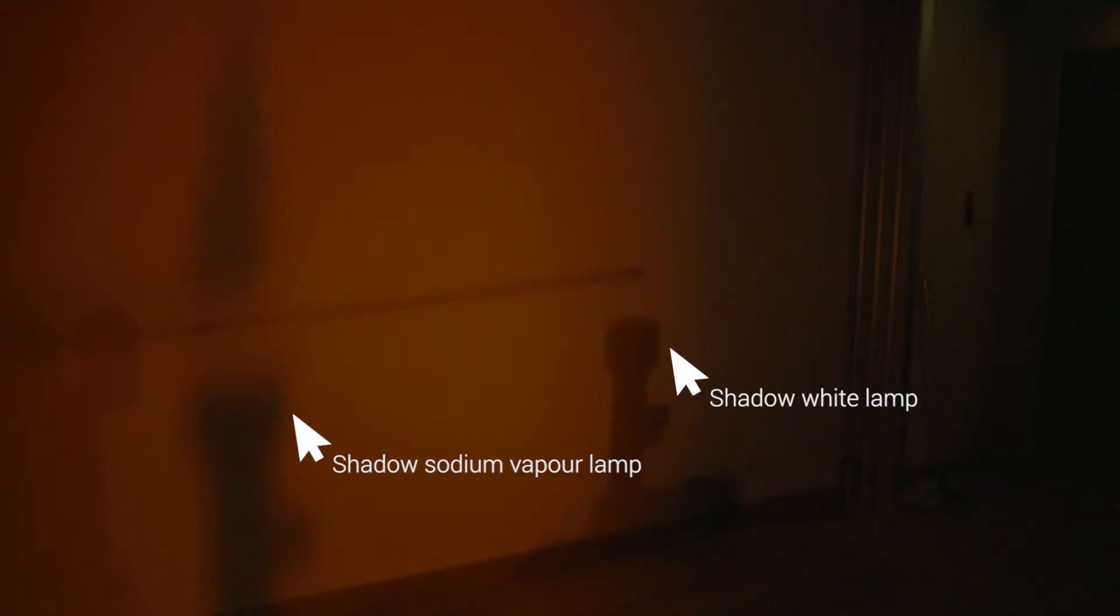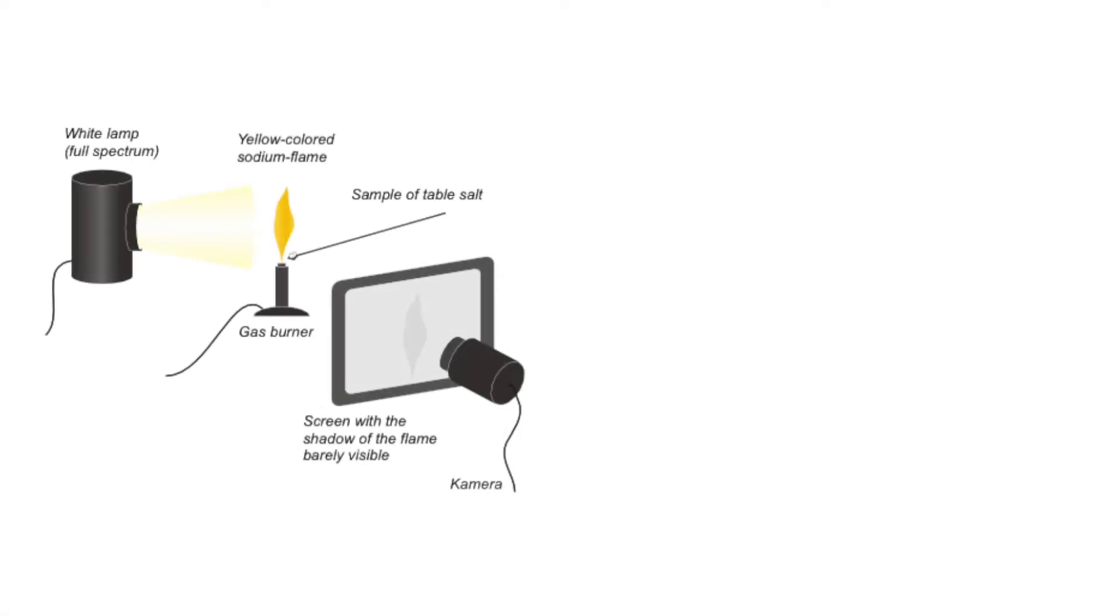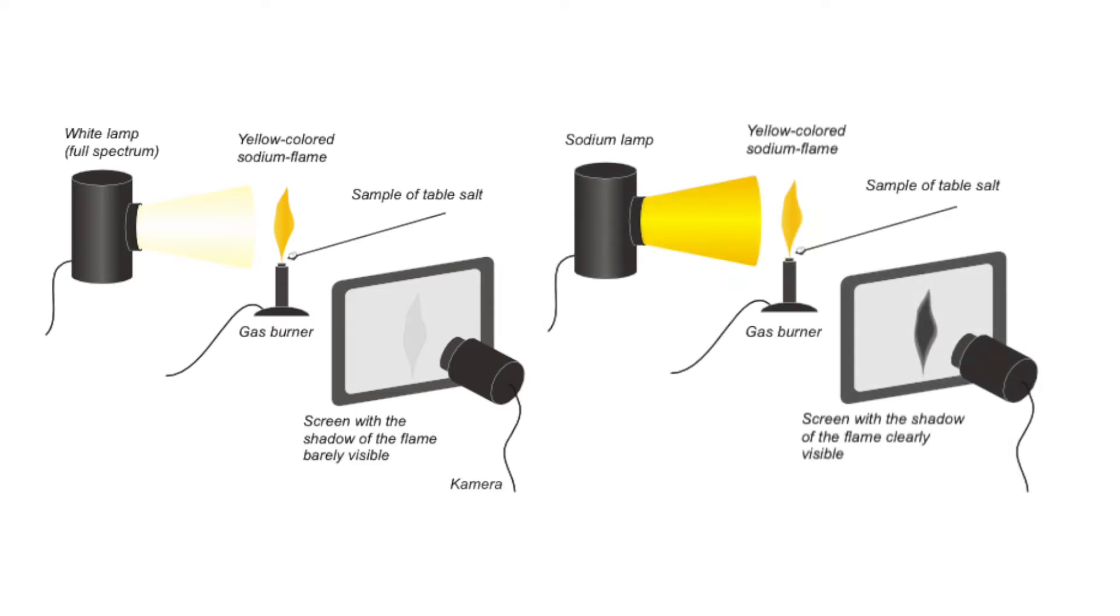The reason for this shadow formation is the absorption of photons by the sodium atoms in the flame. Sodium atoms in the flame are excited by the heat energy and fall back to the ground state by emission of the characteristic yellow light. When a photon emitted by the sodium vapor lamp strikes a sodium atom in the flame which is in the ground state, the atom absorbs the photon and returns to its excited state, since the energy required for excitation corresponds exactly to the energy of the emitted photons.